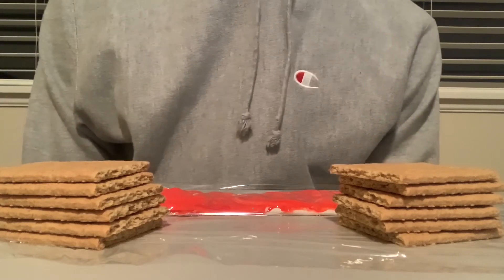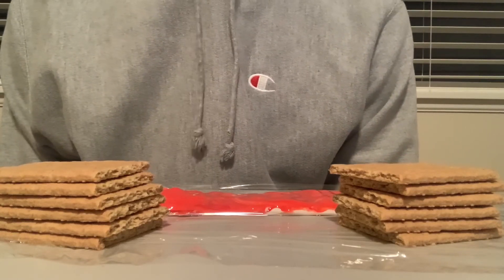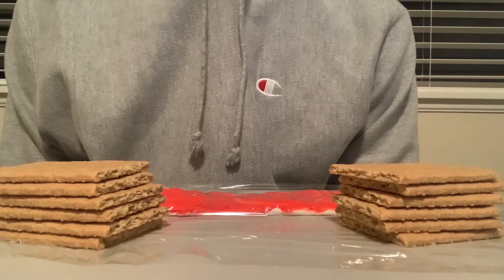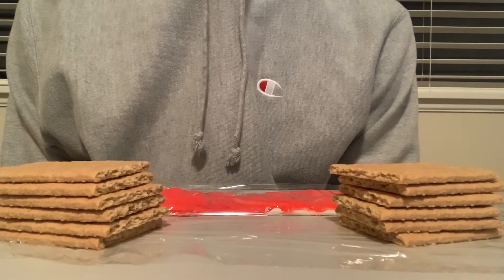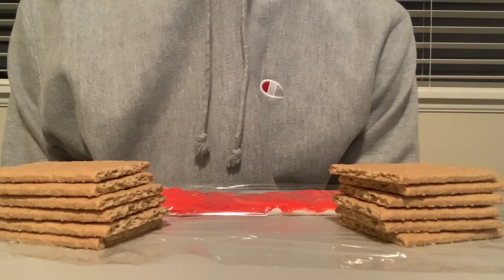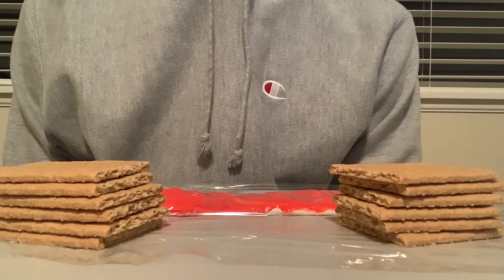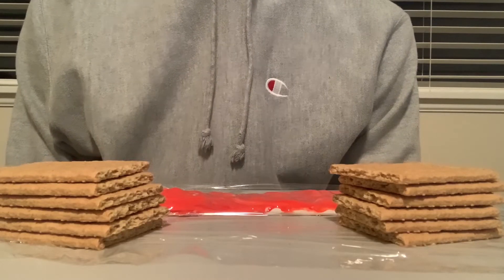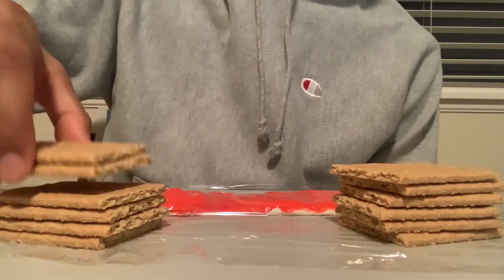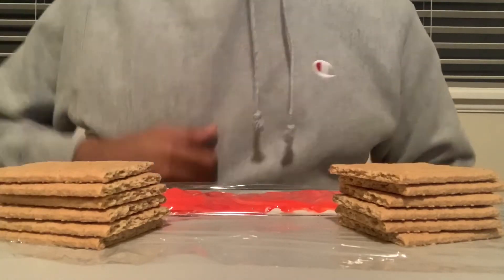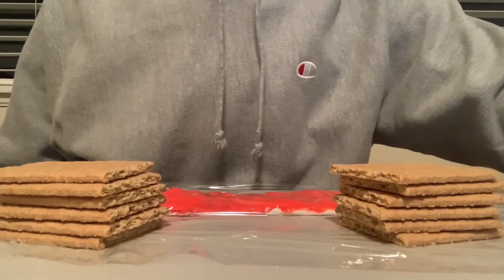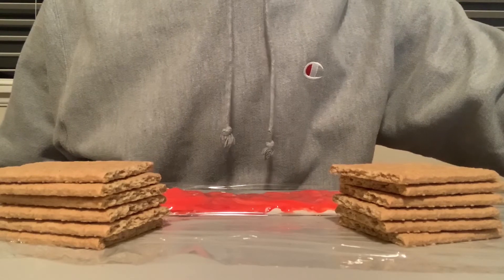Hi everyone, welcome to today's online STEM session. My name is Rohan and today we'll be learning about plate boundaries using a model made from graham crackers and whipped cream. In the last video we talked about how convection currents of the asthenosphere interact with the plates of the lithosphere. Now we'll learn how the different plates interact. The graham crackers will represent the plates of the lithosphere and the red whipped cream will represent the asthenosphere.